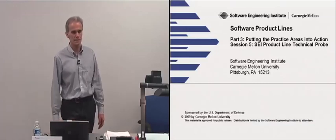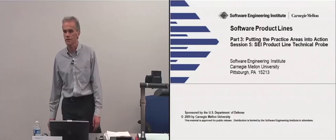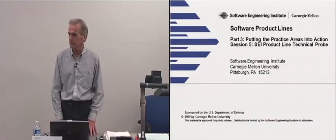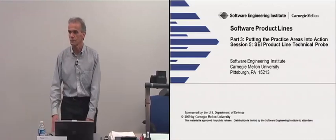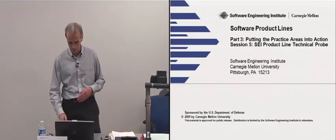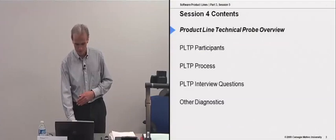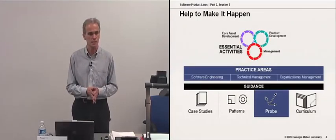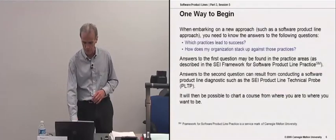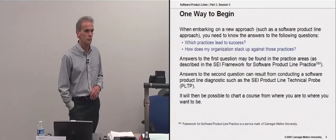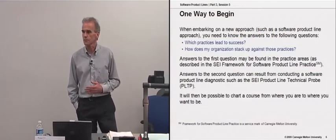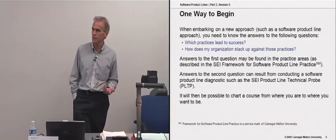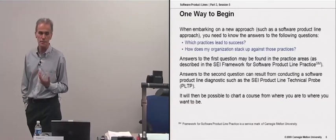The technical probe is a way of doing an assessment of your organization's current state of software engineering practice and using that as a yardstick for gauging how you're going to move from where you are now to where you want to be with respect to your product line ambitions. The probe is yet another form of the series of guidance we have for organizations taking up a product line approach. The idea is to look at your current state of organizational practice to determine what you need to do to be successful, and the answer is in the framework.